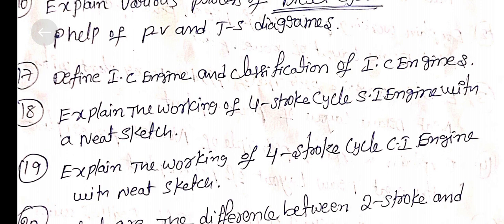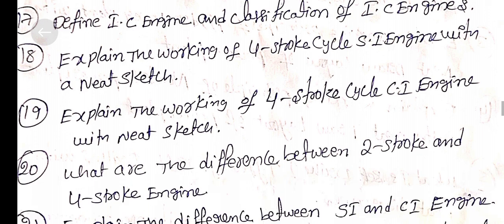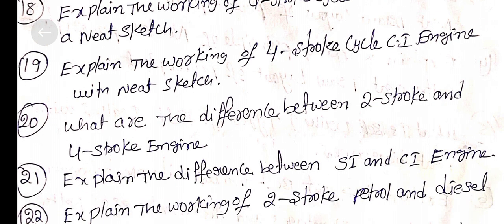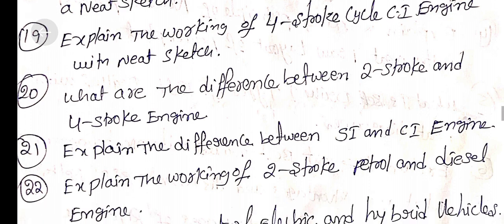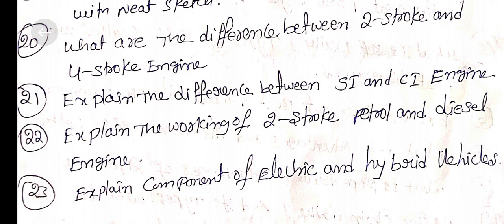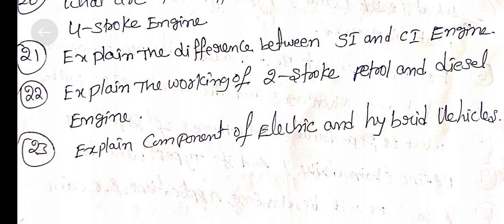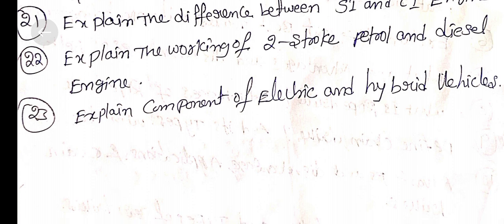Question 17: Define IC engine and classification of IC engines. Question 18: Explain working of four-stroke cycle SI engine with a neat sketch. Question 19: Explain the working of four-stroke cycle CI engine with neat sketch. Question 20: What are the differences between two-stroke and four-stroke engines? Question 21: Explain the differences between SI and CI engines.